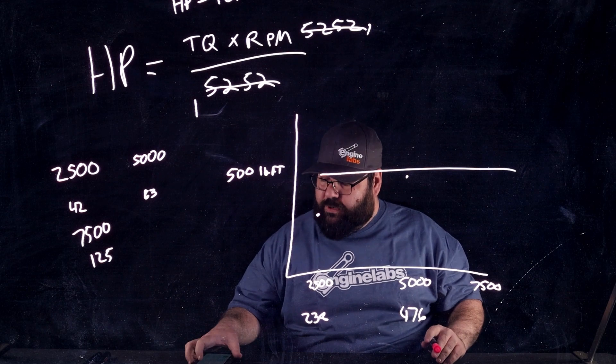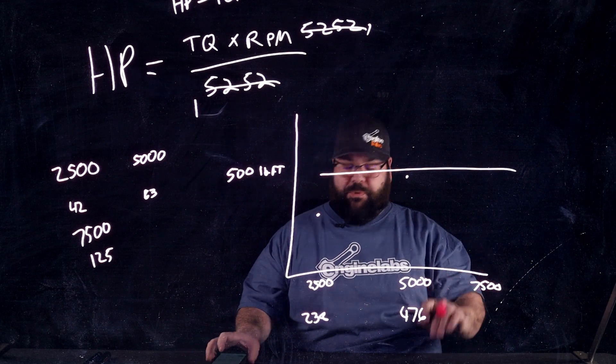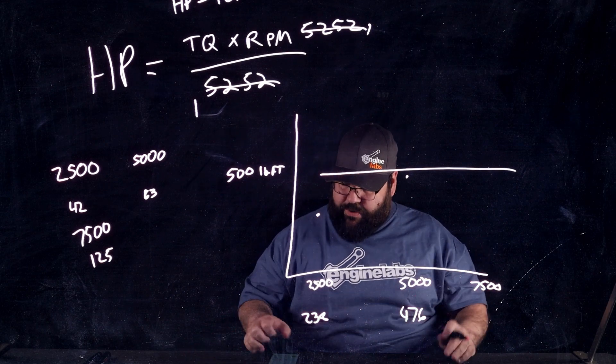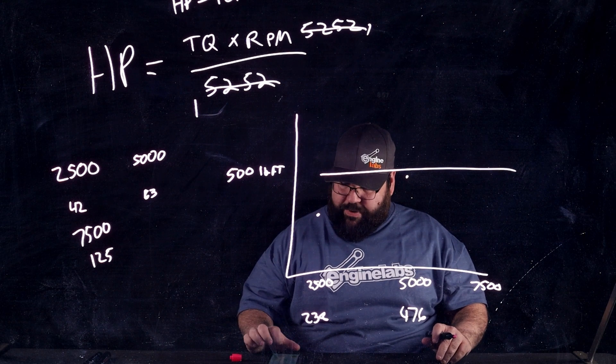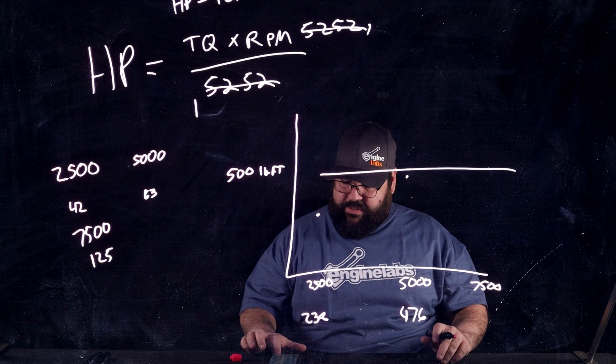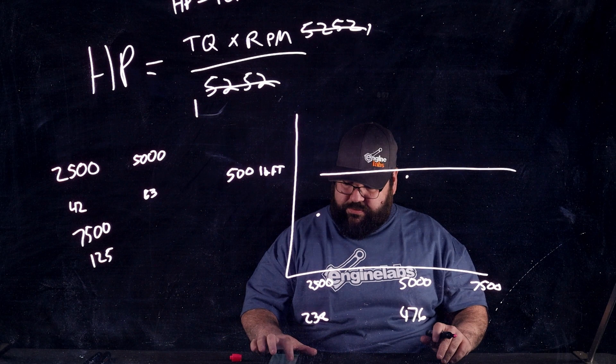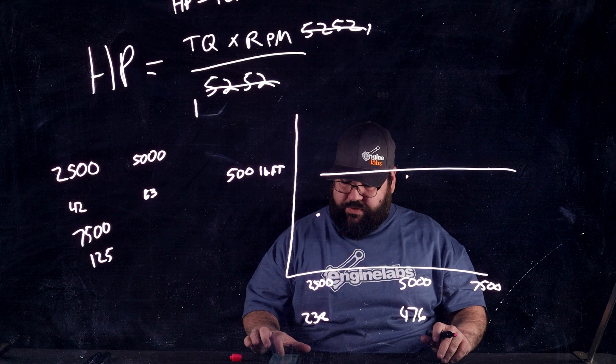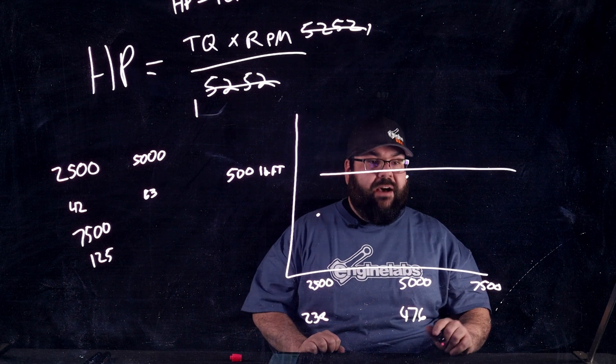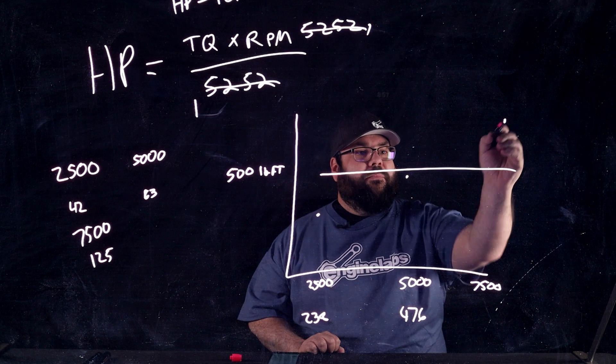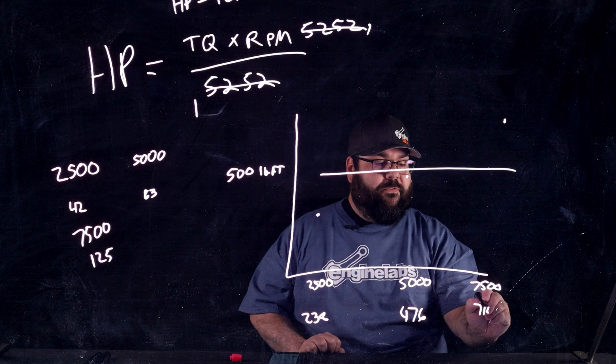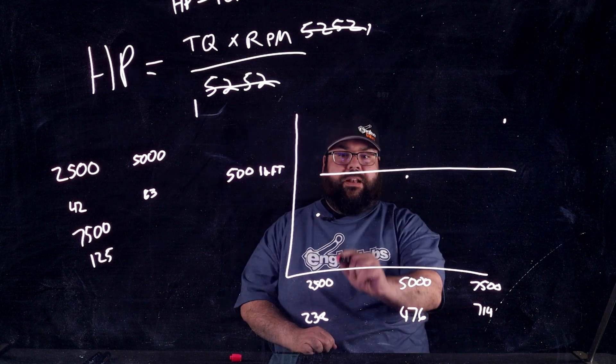So, now at 7500, what did we say? We figured this is going to be 50% more. So, let's go ahead and do it. We're going to go 500 pound-feet of torque times 7500 RPM divided by 5252. And now we have somewhere up there. 714 horsepower. Look at that.